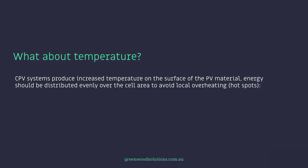The locations of these concentrated PVs are basically in areas that have at least 85 to 87% minimum direct irradiation — in other words, many bright sunny days without cloud cover. CPV systems produce increased temperatures on the surface of the PV material, and energy should be distributed evenly over the cell area to avoid local overheating, i.e., hot spots, which can damage the material.